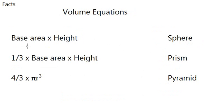Classic volumes: base area times height, a third base area times height, and four thirds times pi r cubed. Let's do things a bit differently.